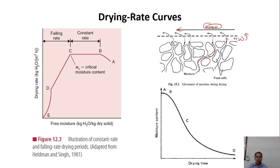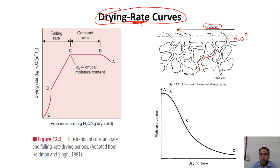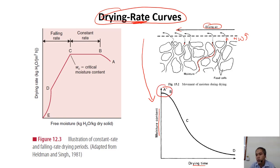Now we look at the drying rate curve — the rate means how fast we do it. Before we look at the drying rate, we look at the moisture content reduction curve. From A to B is just the initial period. From B to C we reduce the moisture content linearly — a straight line.